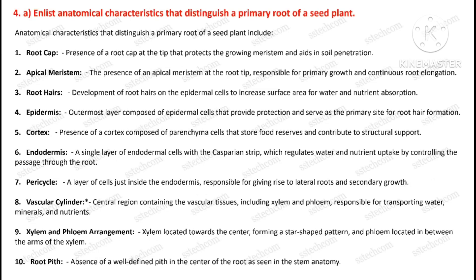Question number four: the first part is to list and elaborate the anatomical characteristics that distinguish a primary root of a seed plant.